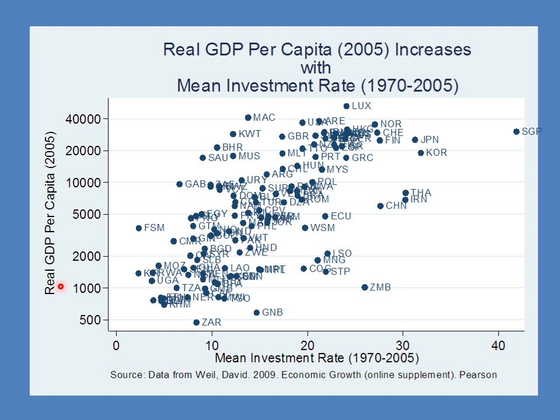What we're showing here is the relationship between real GDP per capita in 2005 — thinking of this as the steady-state level — and the mean investment rate over the previous 35 years. Countries which invested more over those 35 years ended up with a higher level of GDP per capita, quite consistent with the Solow model.